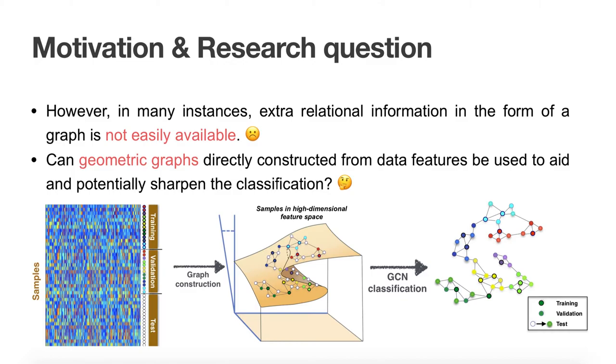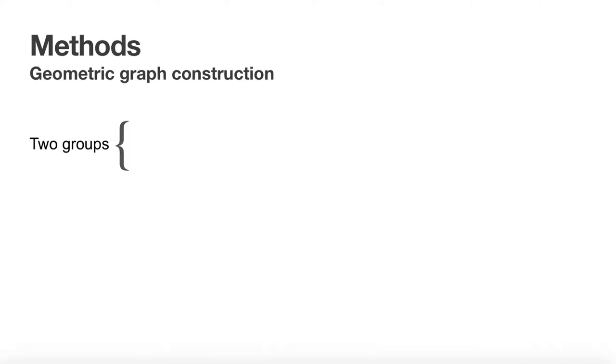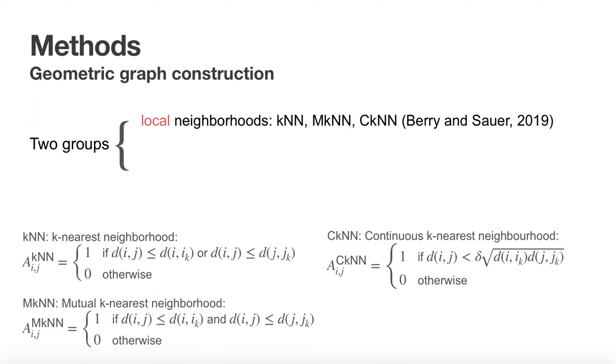Intuitively, you can think that the geometric graph acts as a conduit, ensuring that class labels are predominantly shared between similar samples during learning. We consider several popular geometric graph constructions that fall broadly in two groups. On the one hand, three methods based on local neighborhoods. First, K-nearest neighbor, KNN. Second, Mutual KNN, MKNN.